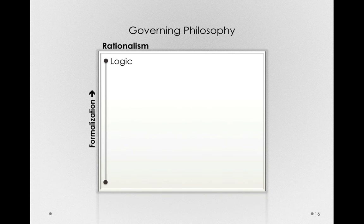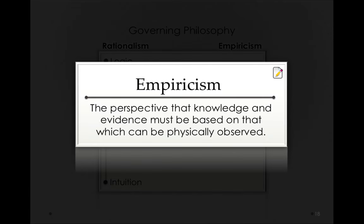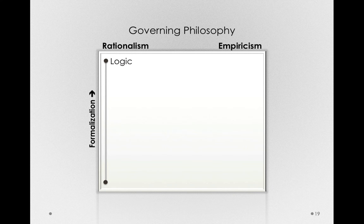Going back to our diagram, let's think about the other side of governing philosophies. Rather than rationalism, empiricism. Empiricism is the perspective that knowledge and evidence must be based on that which can be physically observed. Strong empiricists would include Bacon, Thomas Hobbes, John Locke, George Berkeley, and David Hume. These empiricists would say that observation is the critical way we know things about the world. As far as the dimension goes, the low side of empiricism would probably just be casual observation, and the extreme finds us in the domain of science.